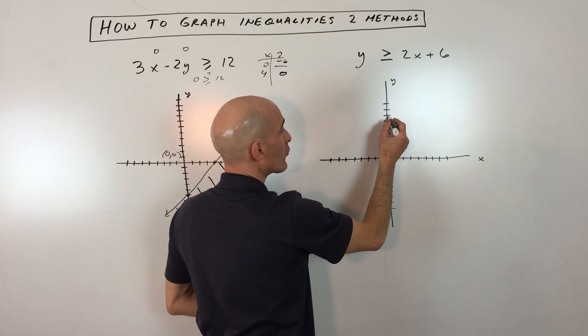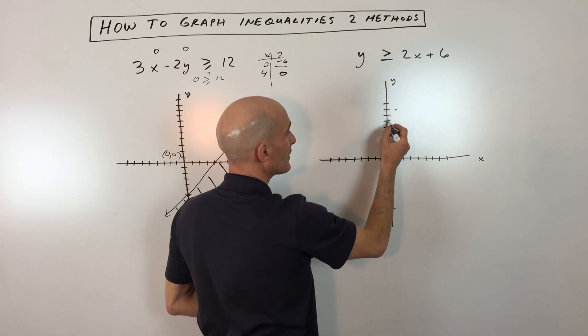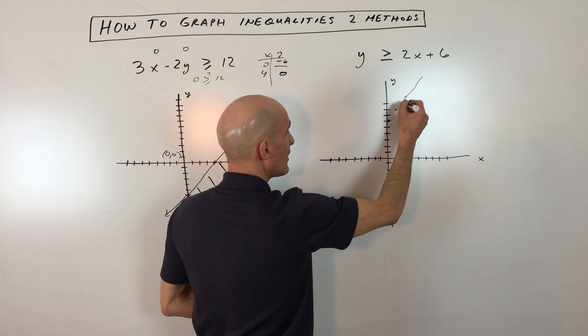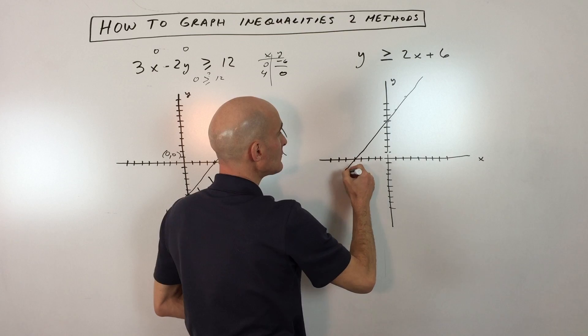It has a slope of 2, so we're going to go rise 2, run 1, okay, and you can repeat that, rise 2, run 1. And what we're going to do now is we're just going to draw a line. It's a solid line, okay, like that.